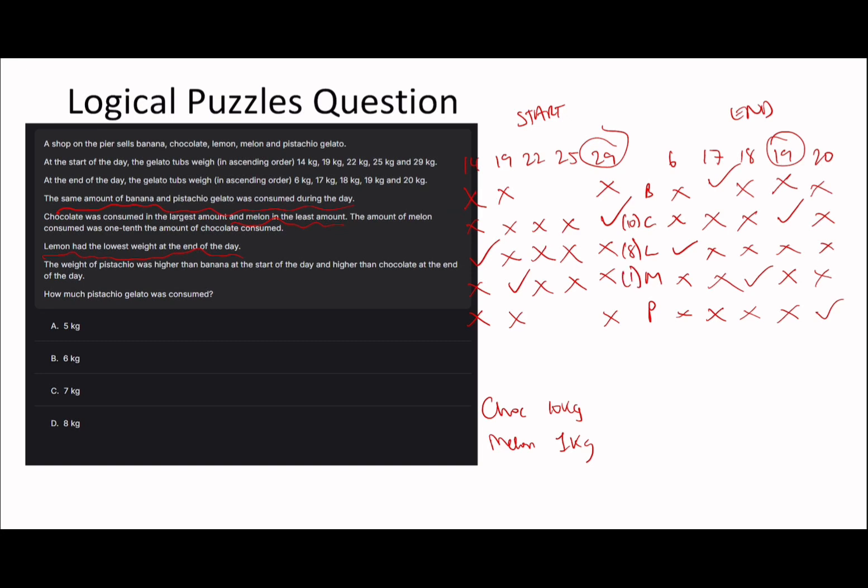Banana goes from 22 to 17, so that's 5 kg consumed. Pistachio goes from 25 to 20, which is also 5. Everything fits.